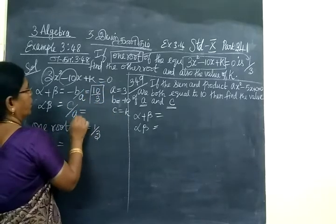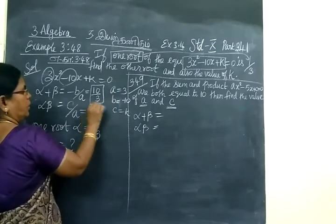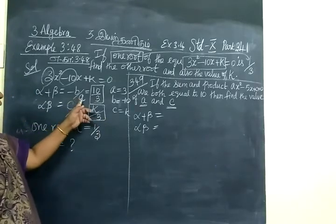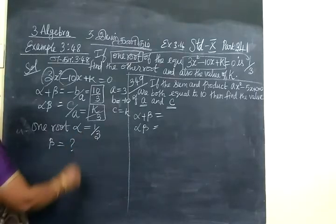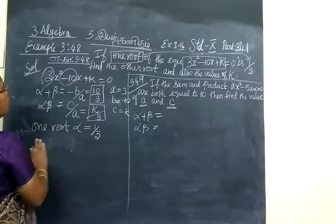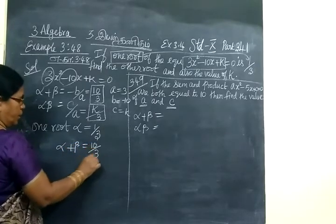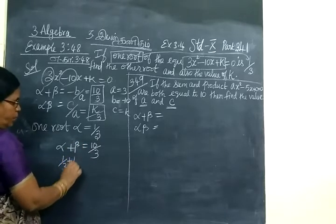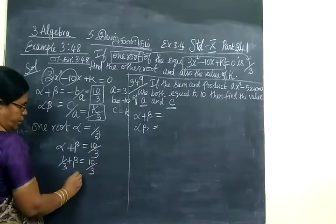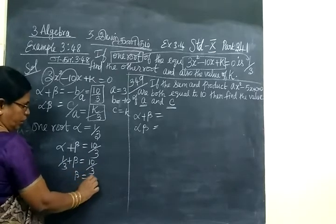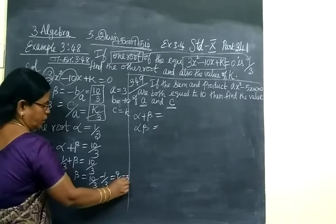Product of the root is c by a. We are given one root equal to 1/3. Now substituting: alpha plus beta equals 10 by 3. Alpha equals 1/3, so 1/3 plus beta equals 10/3. Therefore beta equals 10/3 minus 1/3 equals 9/3 equals 3.